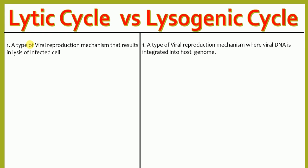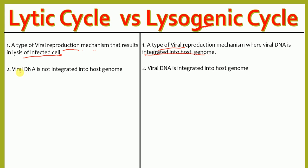Now for the differences. First: the lytic life cycle is a type of viral reproduction mechanism that results in the lysis of the infected cell, whereas the lysogenic life cycle is a type of viral reproduction mechanism where viral DNA is integrated into the host genome — 'gene' referring to genetic.